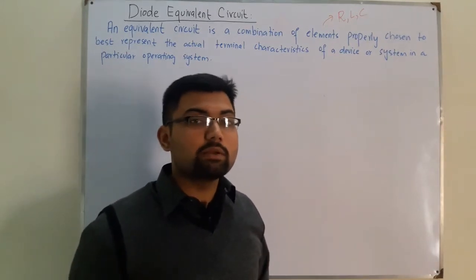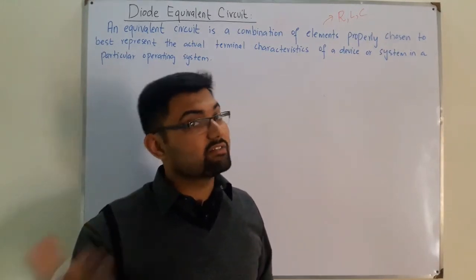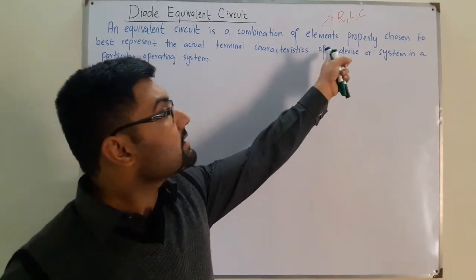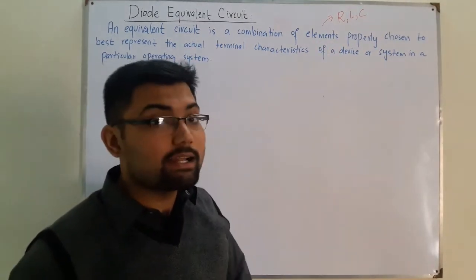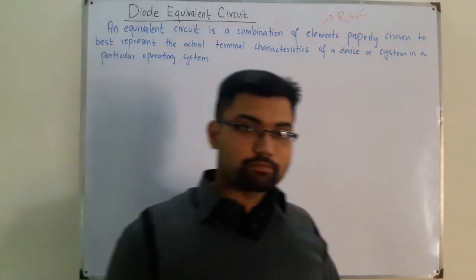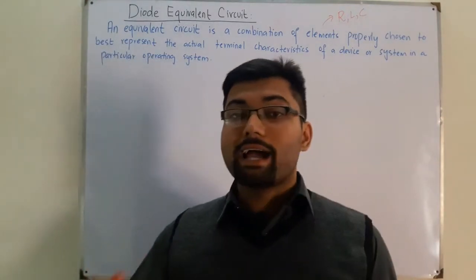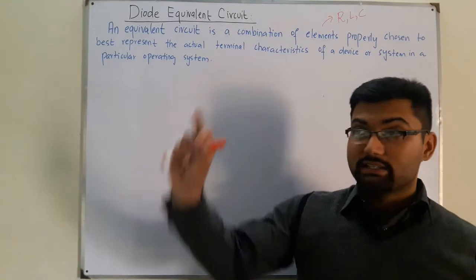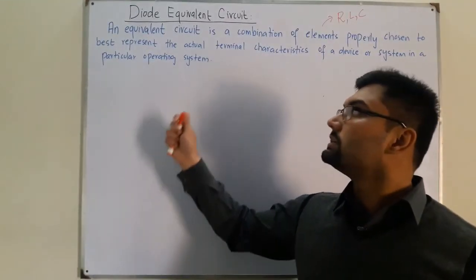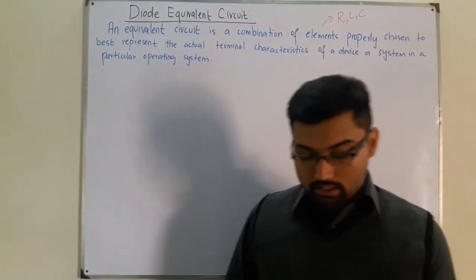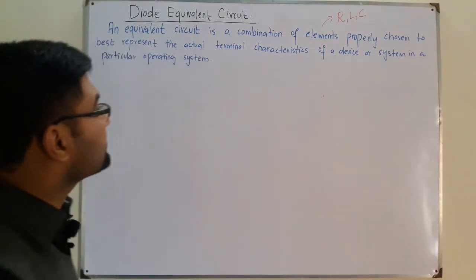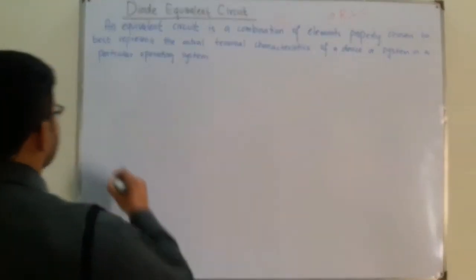These elements are connected in such a manner that they represent the actual diode — they have the same characteristics that an actual diode obeys. We have three equivalent circuits for a diode, and we will discuss them one by one.